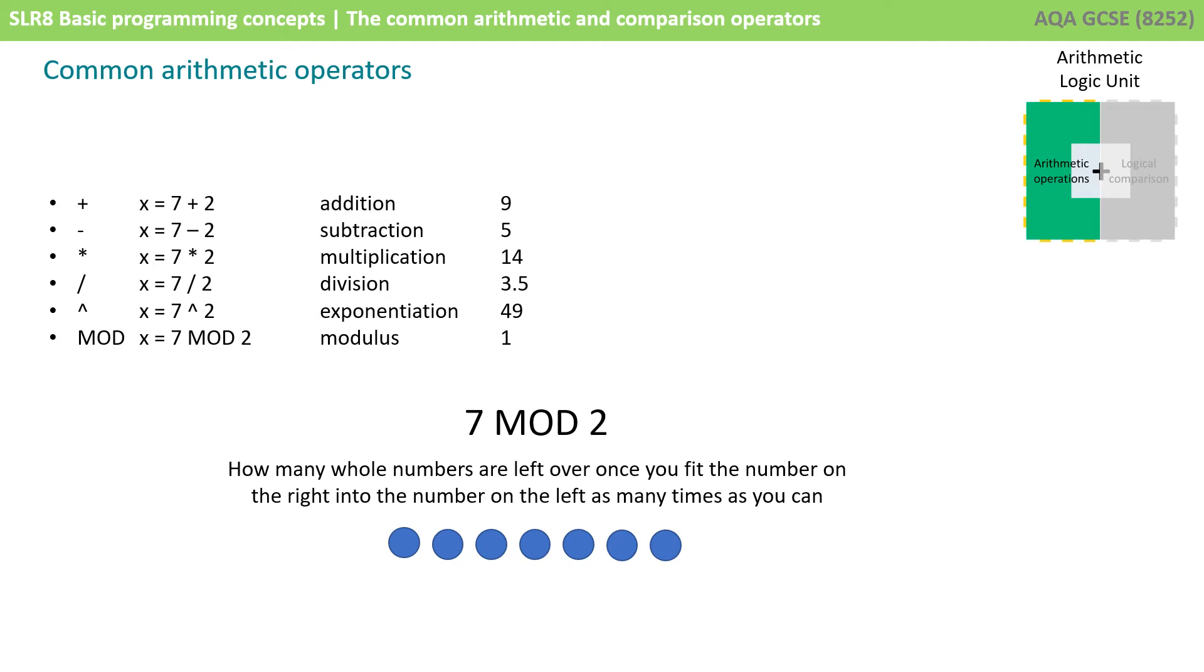If we've got x equals 7 mod 2, how many whole times can we fit the number on the right, 2, into the number on the left? You can see here I can fit it in three whole times. What's left over is 1. That's what modulus returns. It returns 1, it returns what's left over.